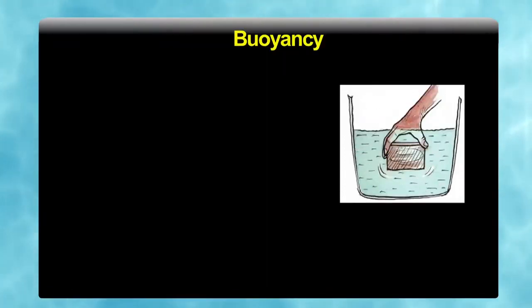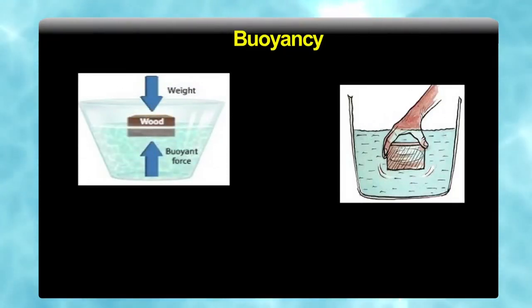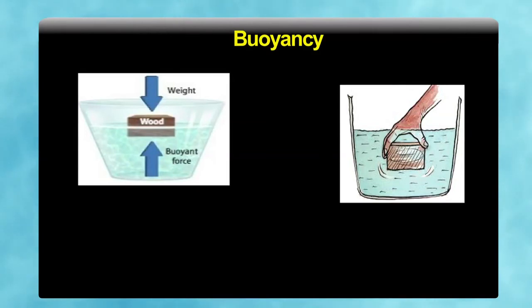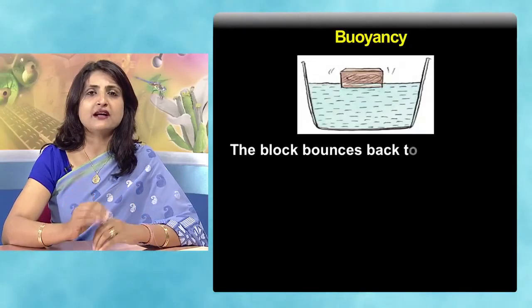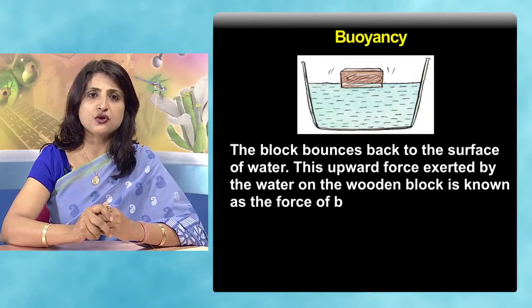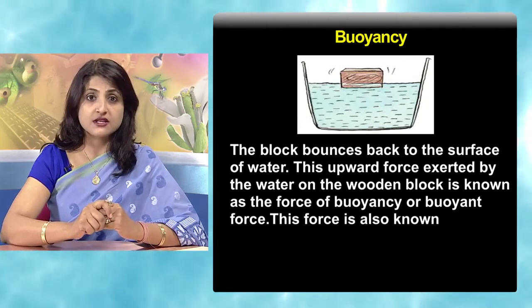For this let us perform this activity. A child lifting a mug filled with water out of bucket. Take a large wooden block and put it in a bucket filled with water. What do you observe? You will see that the wooden block floats when placed on the surface of water. Now push the block into the water. What do you feel? Why do you feel an upward push on your hand? What does it indicate? Well this indicates that water exerts an upward force on the wooden block. Now push the wooden block further down till it is completely immersed in water. Release the wooden block. What do you observe? The block bounces back to the surface of water. This upward force exerted by water on the wooden block is known as the force of buoyancy or buoyant force. This force is also known as up thrust.